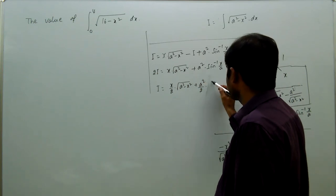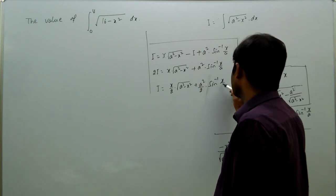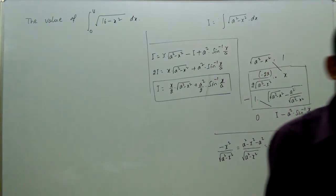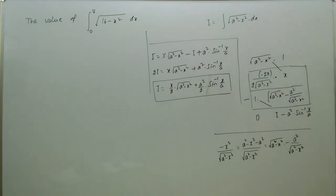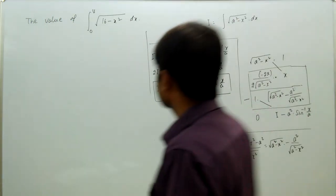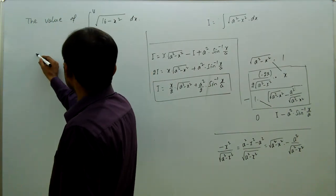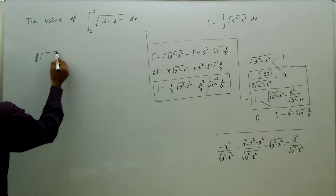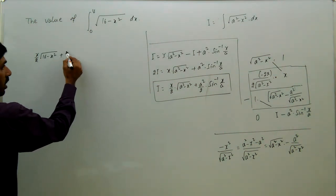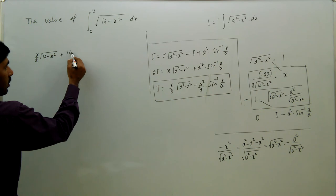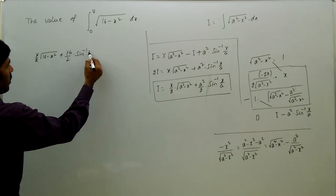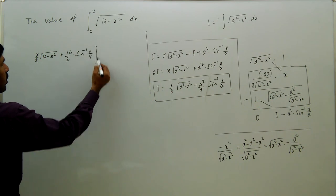Therefore, the integration formula is: x by 2 times root of a squared minus x squared, plus a squared by 2 times sin inverse x by a. This is the formula. Now applying this formula to our problem: x by 2 times root of 16 minus x squared, plus 16 by 2 times sin inverse x by 4, with limits 0 to 4.